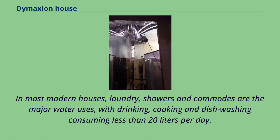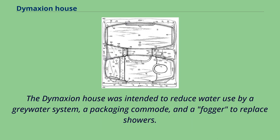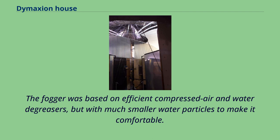In most modern houses, laundry, showers, and commodes are the major water uses, with drinking, cooking, and dishwashing consuming less than 20 liters per day. The Dymaxion House was intended to reduce water use by a gray water system, a packaging commode, and a fogger to replace showers. The fogger was based on efficient compressed air and water degreasers, but with much smaller water particles to make it comfortable.